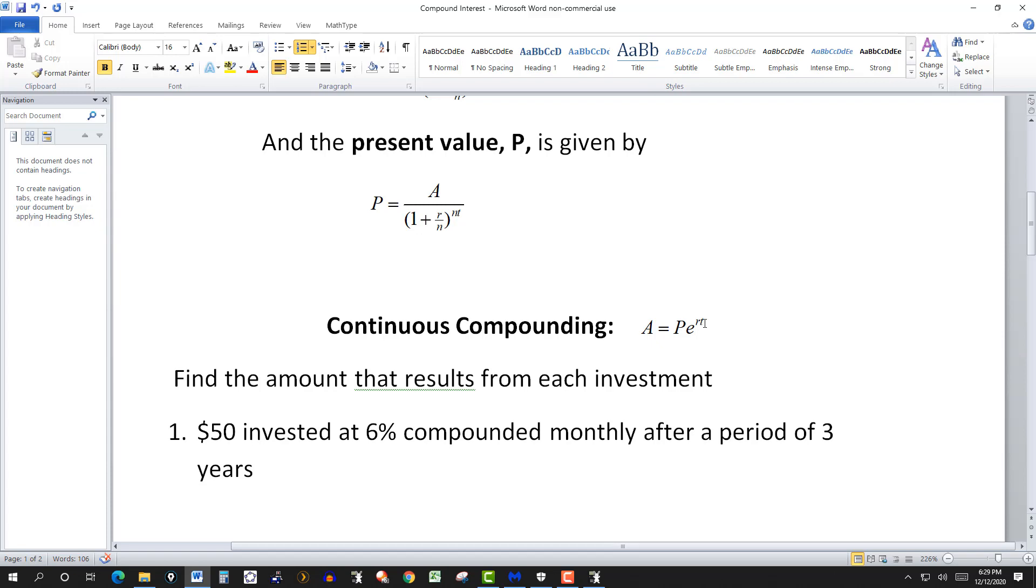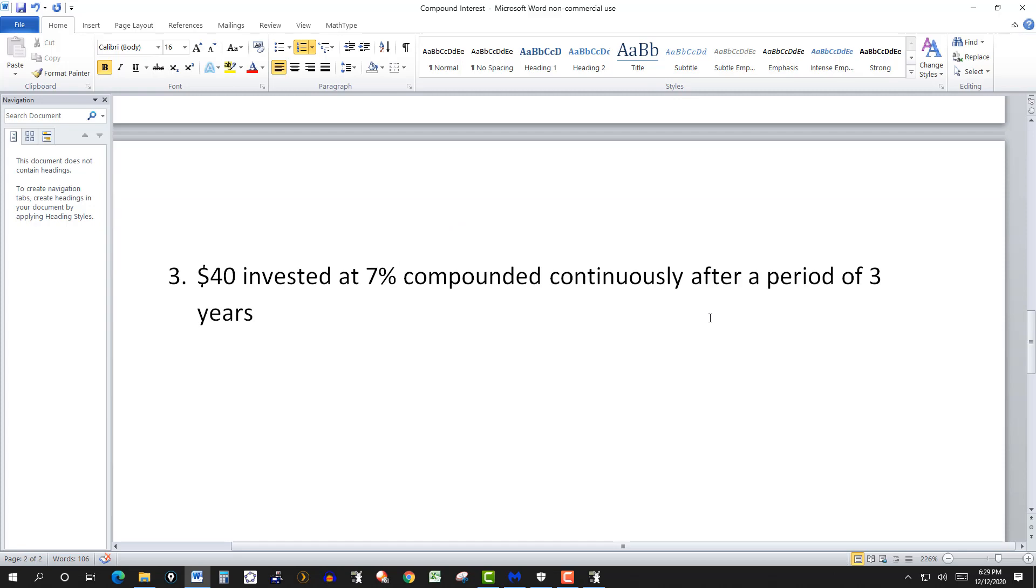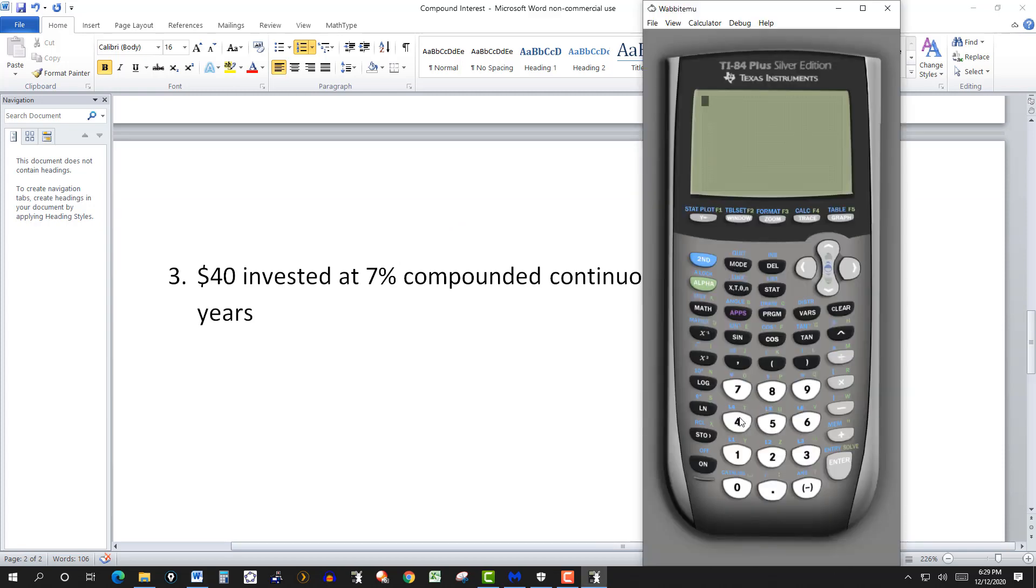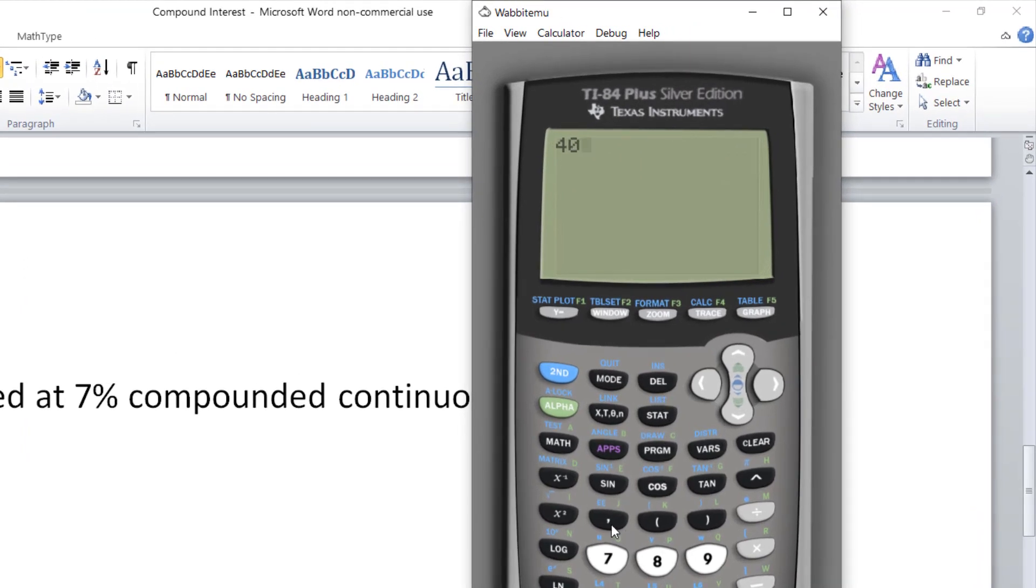R is the given rate and T is the time in years. So this will be 40, and then the exponential E, we'll look for second and E.